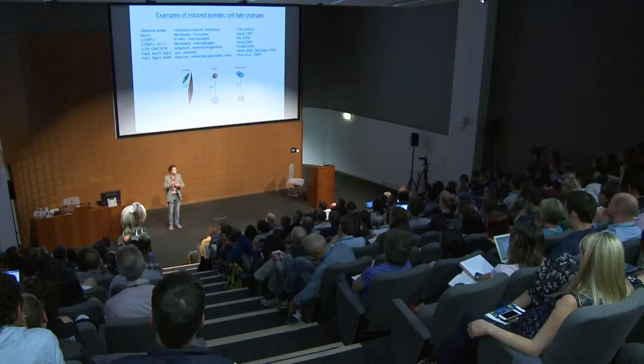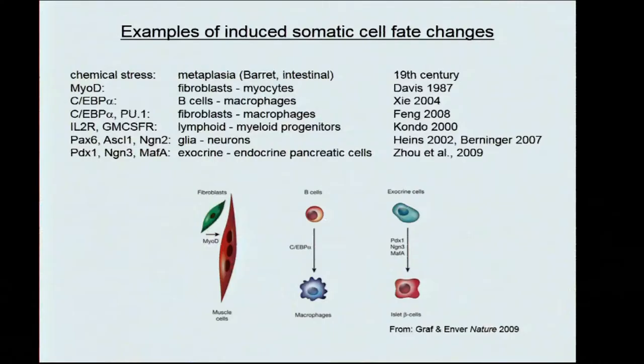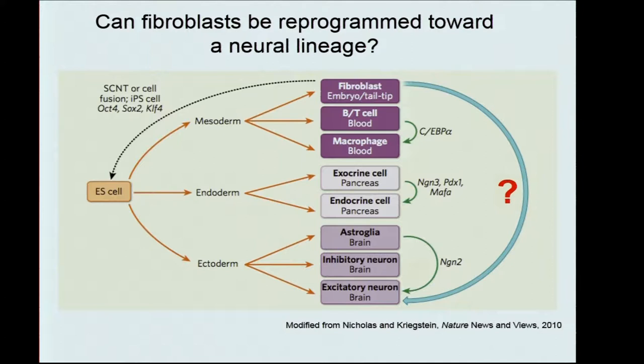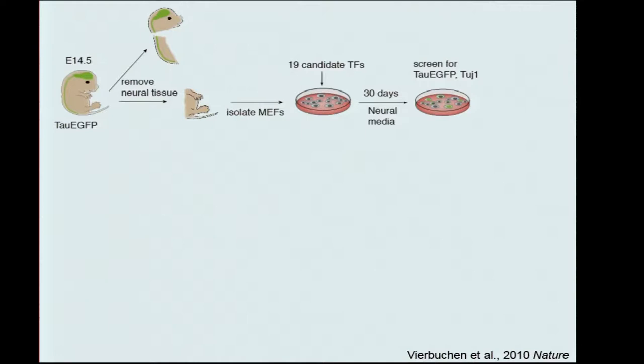After Shinya's work, I wanted to challenge this idea, and we specifically asked whether we can convert skin-derived fibroblasts directly into neurons, and whether this would be possible. In an approach very similar to what Shinya used, we thought of about 20 or so candidate factors that might be able to mediate this conversion. We cloned them all together, mixed them as a pool, transferred them into mouse embryonic fibroblasts, and looked for the reactivation of neuronal markers.